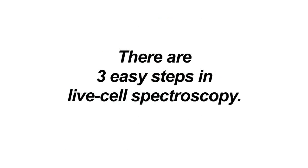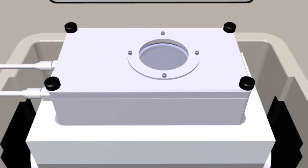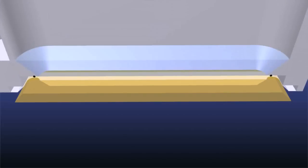There are three easy steps in live cell spectroscopy. Step one: grow live cells to full confluence directly on the ATR substrate, with or without a functionalization layer on the surface.